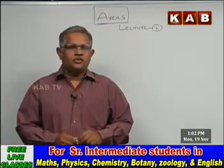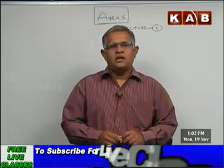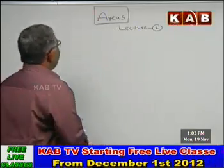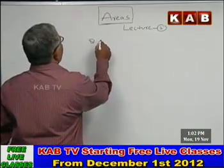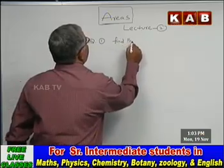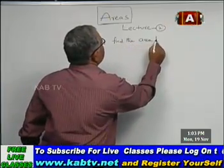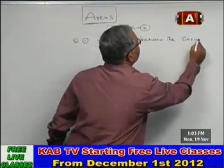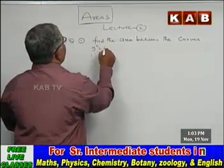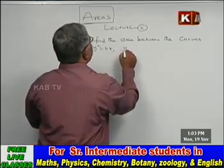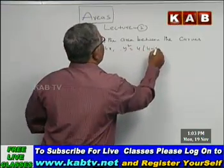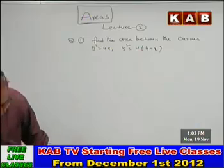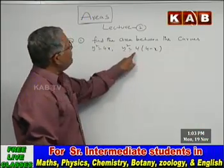In this session, we will do around 10 questions which are very important and I hope you will learn from this. Question 1: find the area between the curves y² = 4x and y² = 4(4 − x). These are the 2 curves. We are supposed to find the area bounded by this curve and this curve.